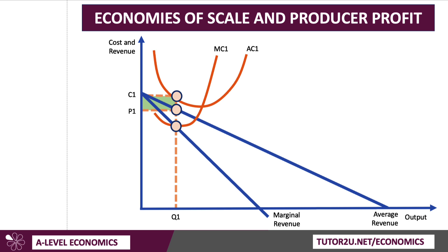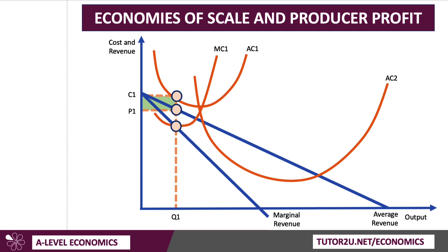What happens if we keep the same demand curve — the same average and marginal revenue curves — but the firm is able to exploit significant economies of scale? Well, it could be the case that they can move on to much lower unit cost curves at a higher scale of production. Don't forget the x-axis is showing the scale of output. So AC1 might fall to AC2, and you can see a clear downward trend in unit cost.